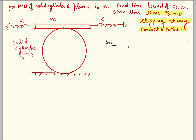Since there is no slipping at any contact point, this means that at both contact points, static friction acts. The friction at each contact is static and unknown in magnitude. In this problem, if we use the energy method instead of the force method, it will be simpler.